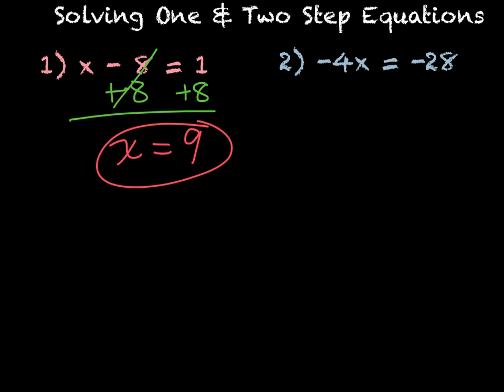Next one, we have negative 4x equals negative 28. When written right next to each other, it means we're multiplying negative 4 times x. To get rid of multiplication, you divide. Divide both sides by negative 4. That cancels out to 1, leaving x equals negative 28 divided by negative 4.